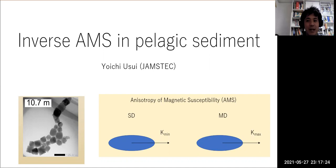For the anisotropy of magnetic susceptibility, single domain particles show peculiar behavior called inverse fabric, where the maximum susceptibility direction corresponds to the particle elongation. This behavior would complicate the interpretation of magnetic susceptibility anisotropy.